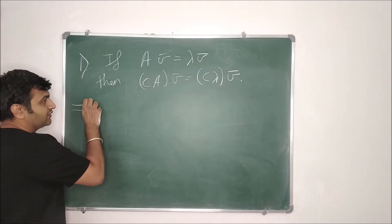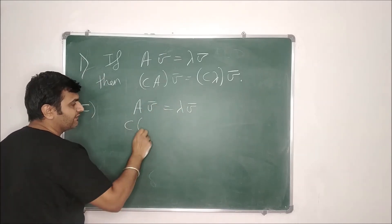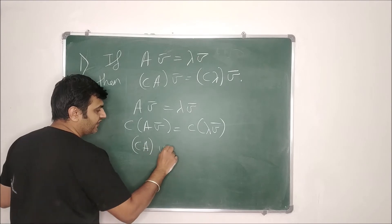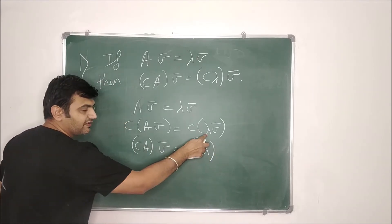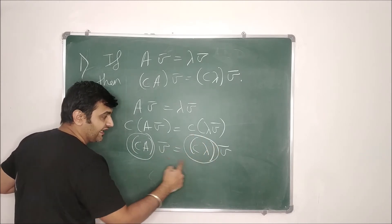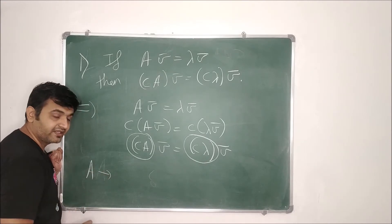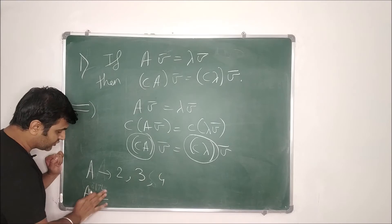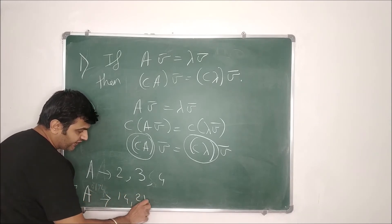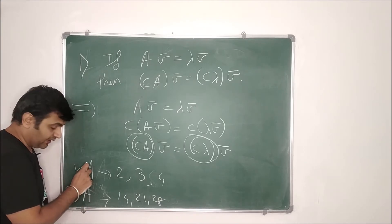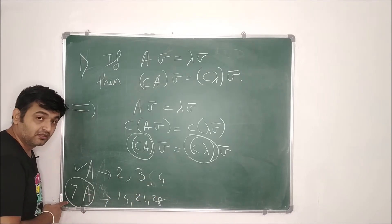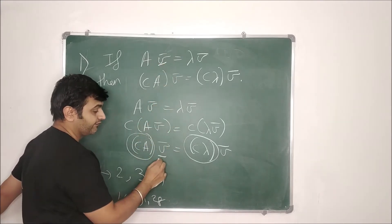The proof is easy: start with Av̄ = lambda·v̄, multiply both sides by C to get CA·v̄ = C·lambda·v̄. So for CA the eigenvalue is C·lambda and the eigenvector is the same. For example, if A has eigenvalues 2, 3, and 4, then 7A has eigenvalues 14, 21, and 28. The eigenvectors remain the same.